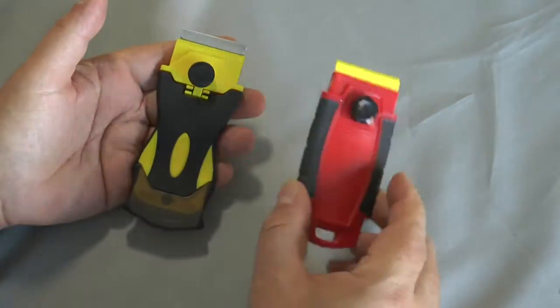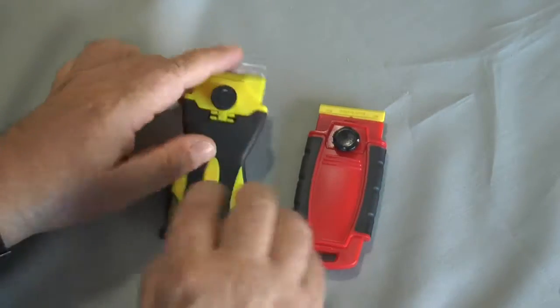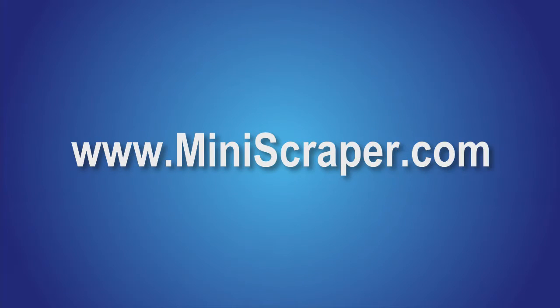The Ergo and the Big Red scraper - you'll find them all on miniscraper.com. These are terrific scrapers. Thank you.